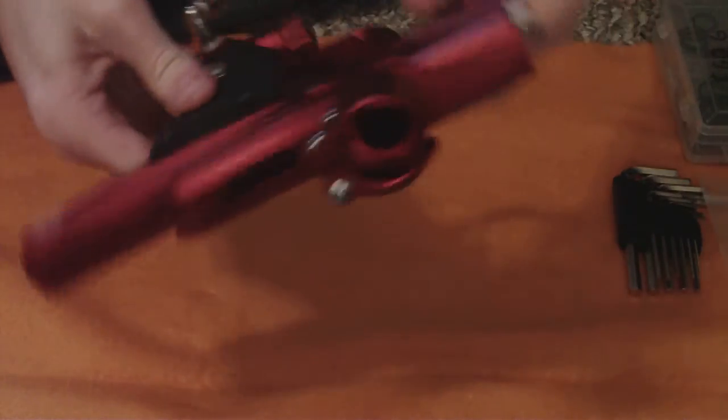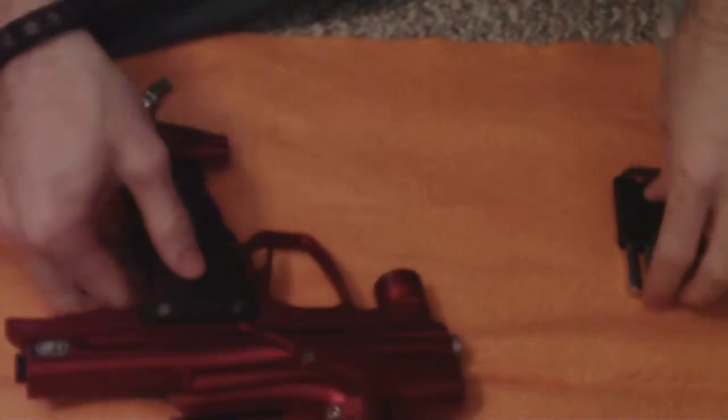Lay them parts to the side, we'll get to them in a second. Go ahead and disconnect the macro line so it's out of the way. Let's get to the rammer.